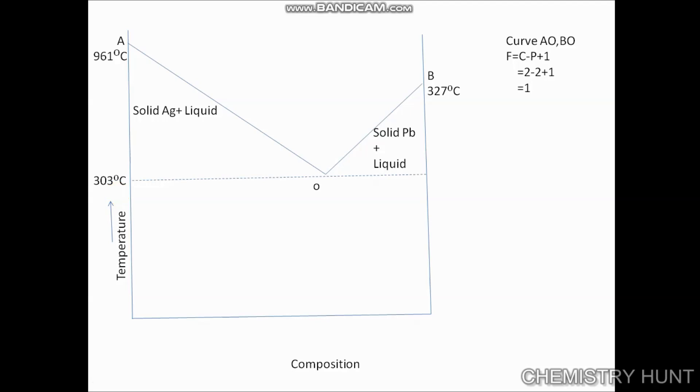At this point, the solution gets saturated with respect to lead and no more lead can go into the solution. At point AO, it is a freezing point, and when the silver starts melting, it gradually mixes with the lead and gets saturated.